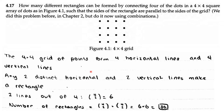Since there are two horizontal and two vertical, we do C(4,2) times C(4,2), which equals 6 times 6, which equals 36 ways.